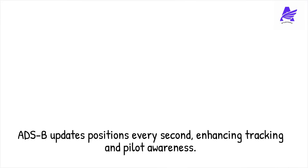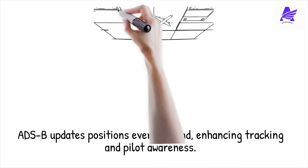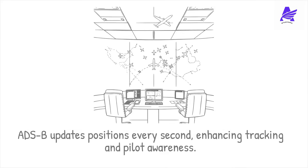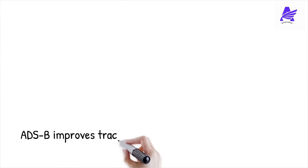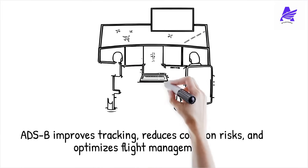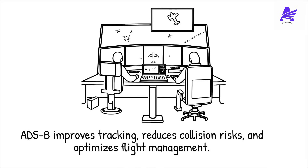ADS-B updates aircraft positions every second, providing highly accurate tracking. ADS-B Out allows the aircraft to automatically transmit its real-time position to ATC and other ADS-B equipped aircraft. ADS-B In allows the aircraft to receive data from other ADS-B aircraft, improving pilot situational awareness. This system enhances aircraft tracking, reduces mid-air collision risks, and enables air traffic controllers to manage flights more efficiently. ADS-B supports more direct routing, improving fuel efficiency and reducing delays. Many countries have made ADS-B mandatory for commercial and general aviation.